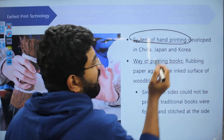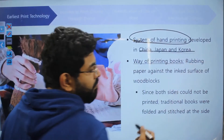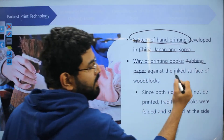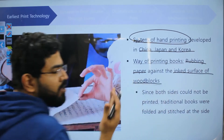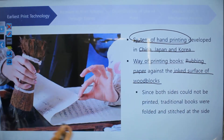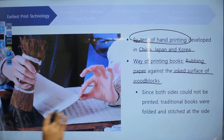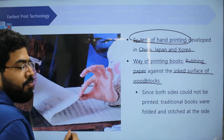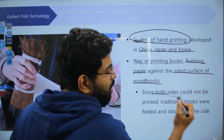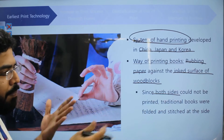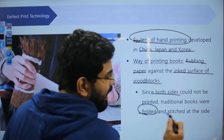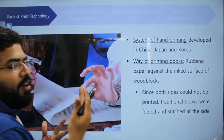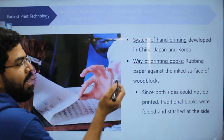The system of hand printing was developed in China, Japan, and Korea. They rubbed paper against the inked surface of wood blocks. The wood blocks would be inked and the paper would be rubbed on top, and hence the paper would get printed. However, it could only be done on one side, so the books were folded and stitched at the side.